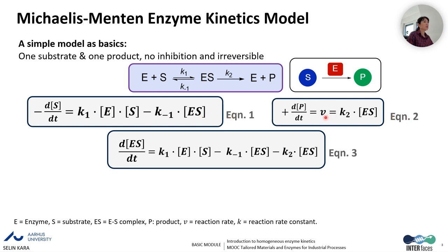Equation number two is the formation of the product: the change in the concentration of the product over time is equal to K2 multiplied by the ES complex. Equation number three tracks the ES complex: the change in ES complex concentration over time is equal to K1 multiplied by E multiplied by S, minus K-1 multiplied by ES, minus K2 multiplied by ES.